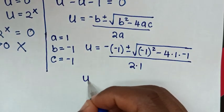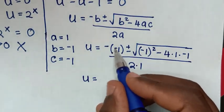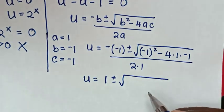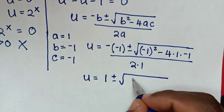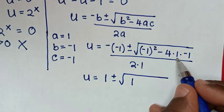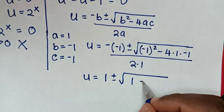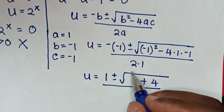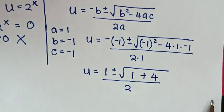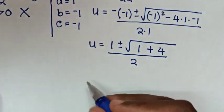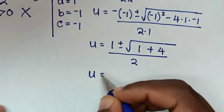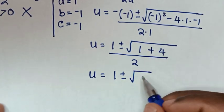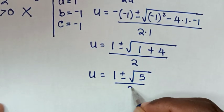Substituting: u equals positive 1 plus or minus square root of (negative 1 squared minus 4 times 1 times negative 1), all over 2. That gives u equals 1 plus or minus square root of (1 plus 4) over 2, which is 1 plus or minus square root of 5, over 2.